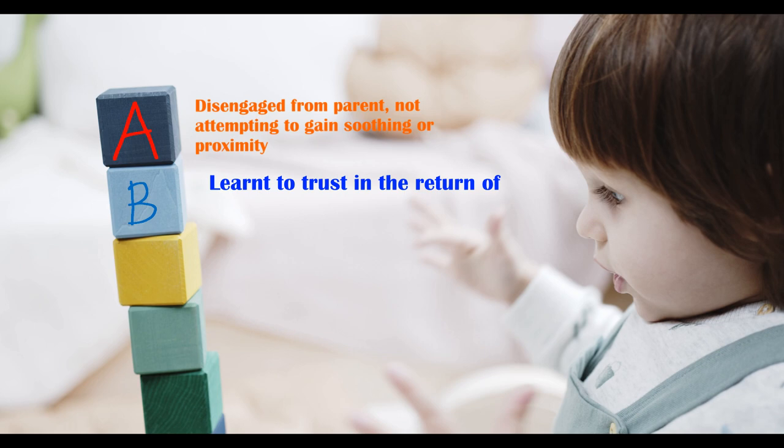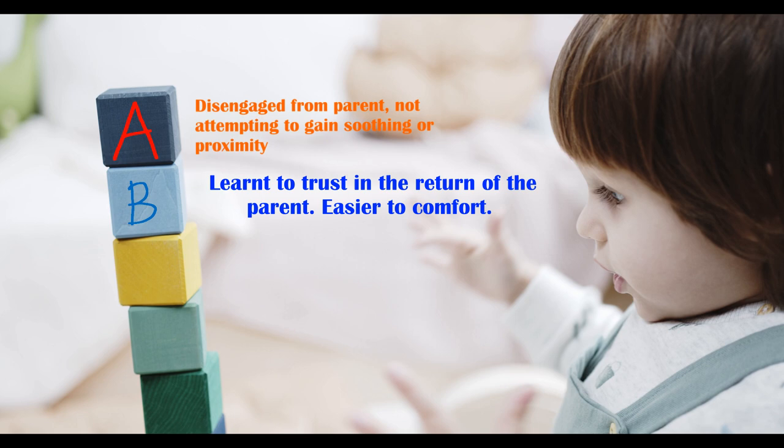Cluster B had previously learned from experience that their parents were very likely to come back after separation. Some of this cluster therefore wouldn't cry out straight after the mother had left, because they had learned to trust in their parents' return. After a short period of time, the children would become unsettled and cry out for the mother. However, once the mother returned, the children were often easy to comfort and would begin to explore again.